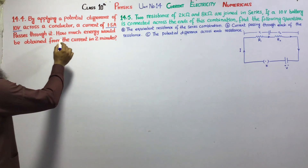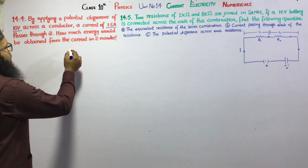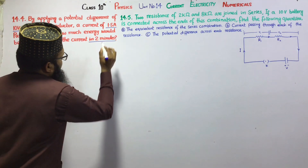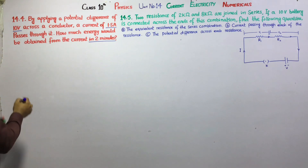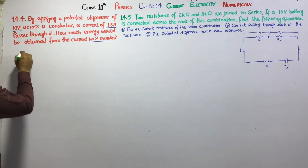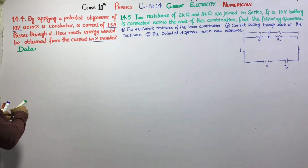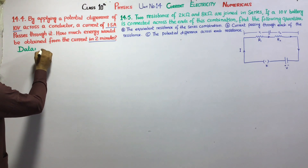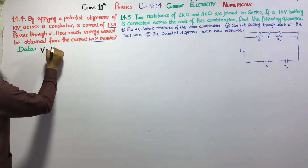How much energy would be obtained from the current in 2 minutes? Time has given us 2 minutes. First of all, we will note the data. We have given potential difference V = 10V.